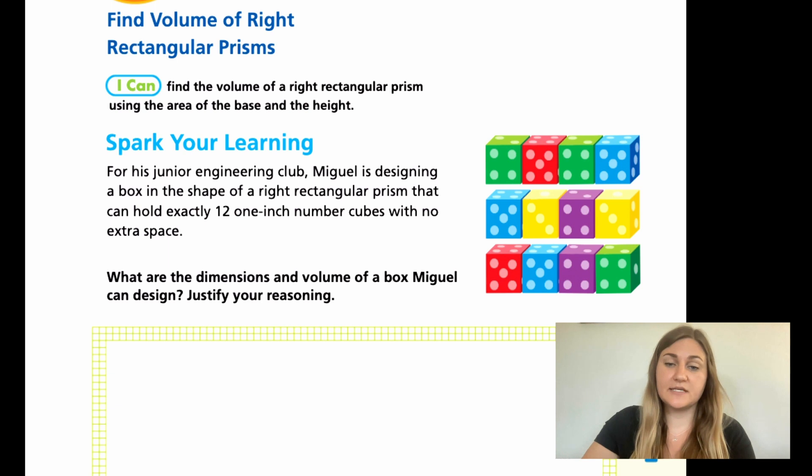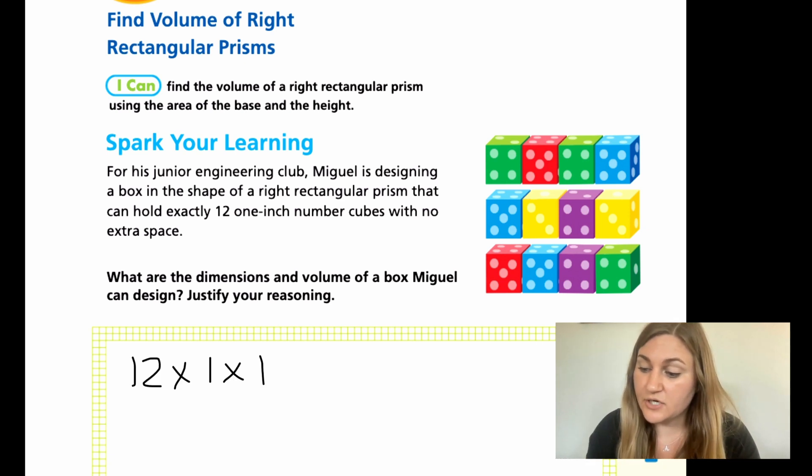We want to find different dimensions in which that can work. We did do that a couple lessons back, just figuring out all those different configurations of how to have the exact same volume. The one I personally always like to start off with is the easiest one that comes to mind. So if it's 12 high, then the length and the width are just going to be 1. So 12 by 1 by 1 would still give me a volume of 12.